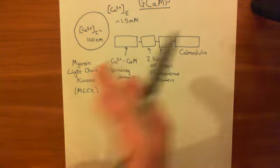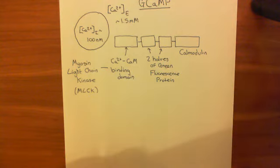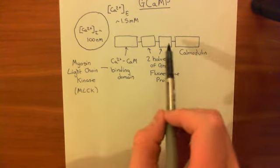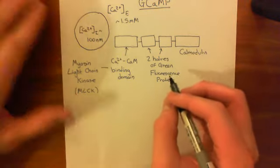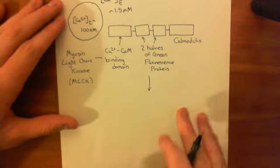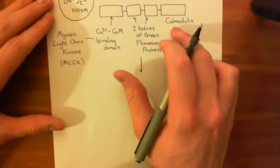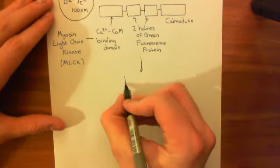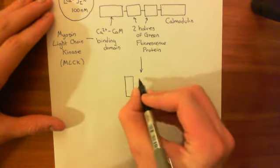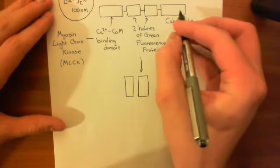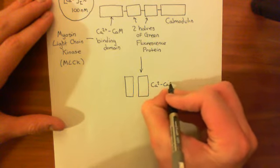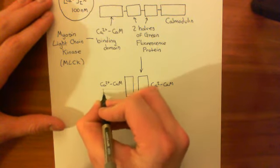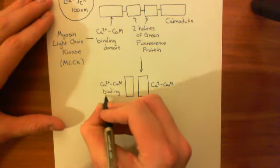So now why does this work as a calcium sensor? Well, basically when calcium goes up in the cytoplasm, calcium is going to bind to this calmodulin, so you're going to get a calcium-calmodulin complex here. Once you've got this calcium-calmodulin complex, it's going to want to bind to the myosin light chain kinase calcium-calmodulin binding domain. So what ends up happening is that your chimeric protein ends up folding so that the calcium-calmodulin complex ends up binding to this calcium-calmodulin binding domain, which we took from myosin light chain kinase.